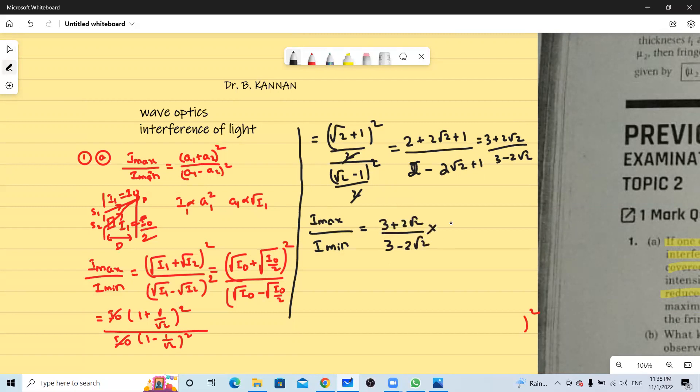Now I am just taking the conjugate 3 plus 2 root 2 by 3 plus 2 root 2. And then now this will become 3 plus 2 root 2 the whole square. This is a minus b a plus b, so a square minus b square.